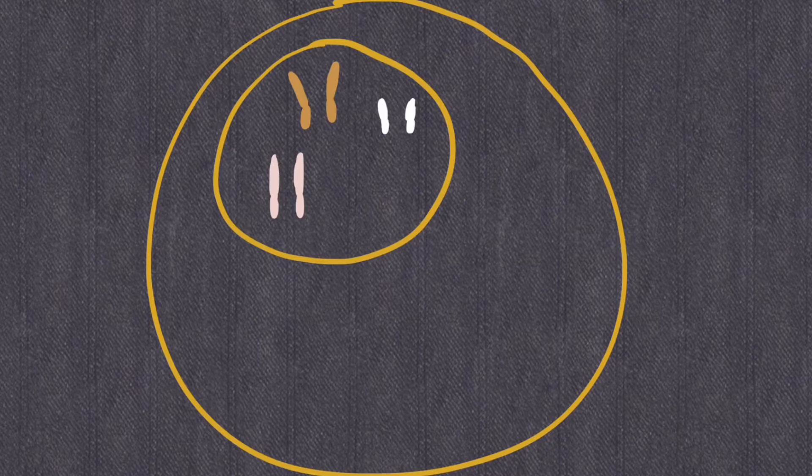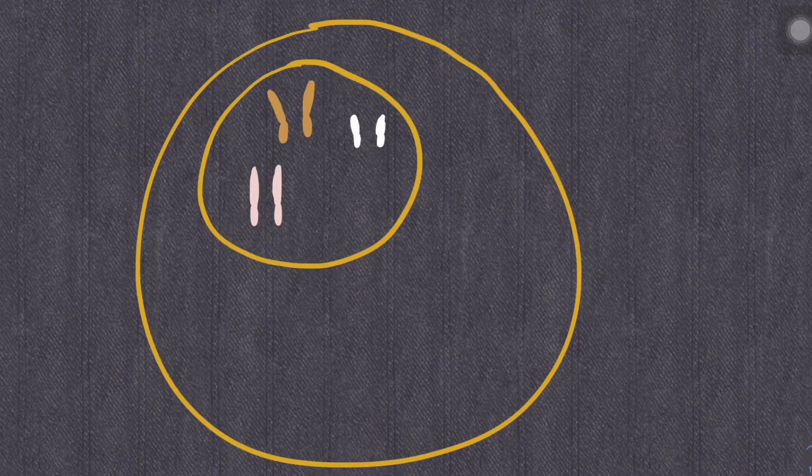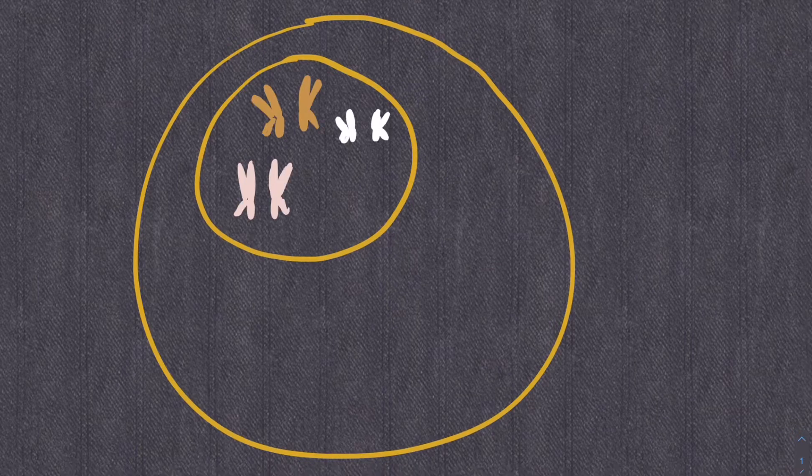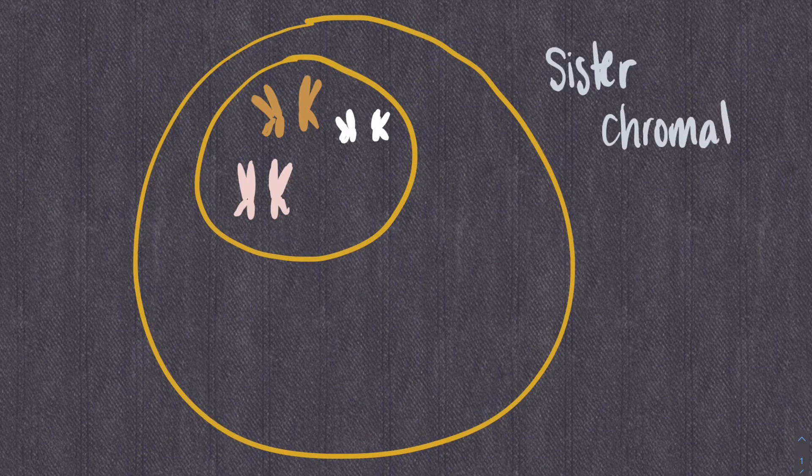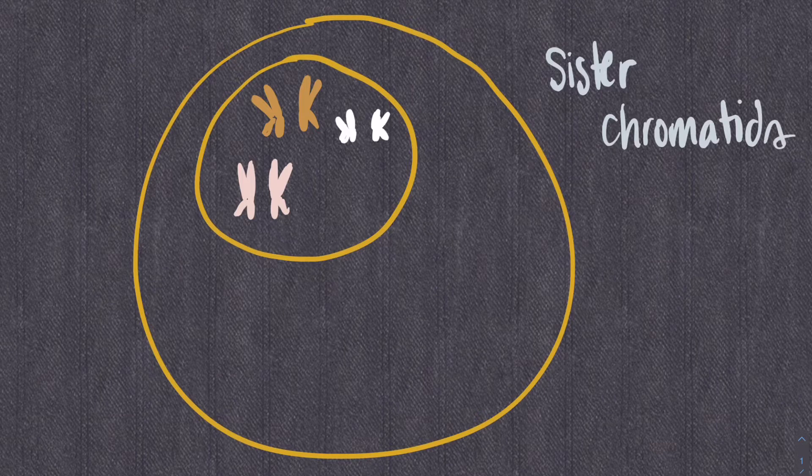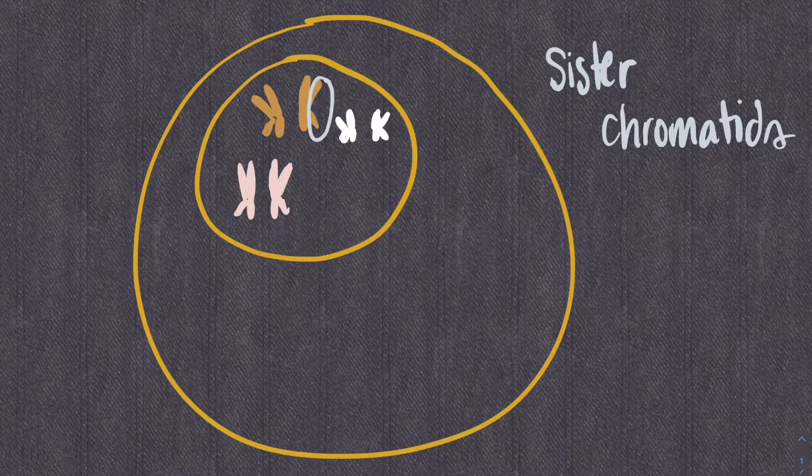The next step that needs to happen before meiosis occurs is chromosome duplication. When a chromosome is duplicated, the resulting attached identical chromosomes are referred to as sister chromatids. It's really easy to mix up these terms, so let's make sure that you guys have this really solid. This is one chromosome. This is also considered one chromosome when the chromosome duplicates.